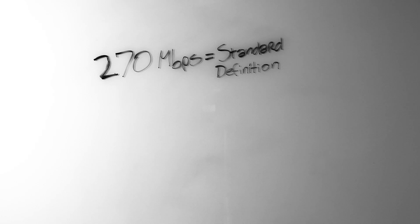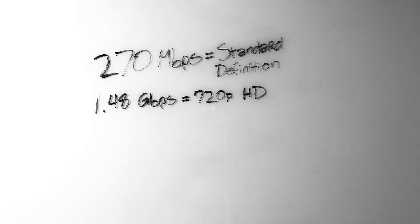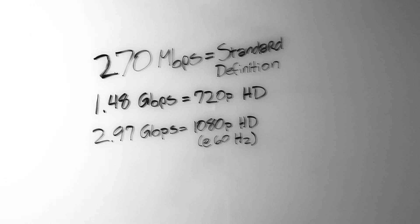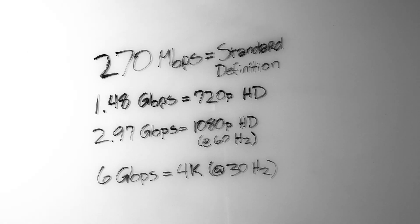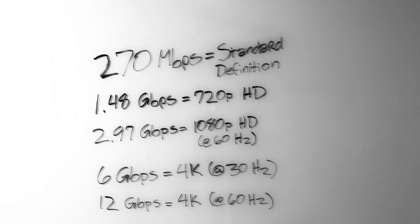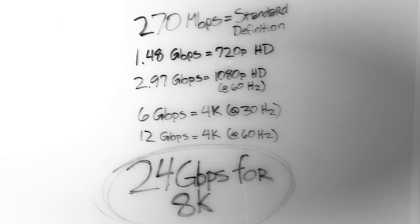It's important to know that there are different bit rate requirements needed to support higher video formats. 270 megabits per second is known as standard definition. 1.48 gigabits per second is 720p HD. 2.97 gigabits per second is 1080p HD at 60 hertz. 4K at 30 hertz is 6 gigabits per second. 4K at 60 hertz is 12 gigabits per second. For 8K at 30 hertz, the rate is 24 gigabits per second.